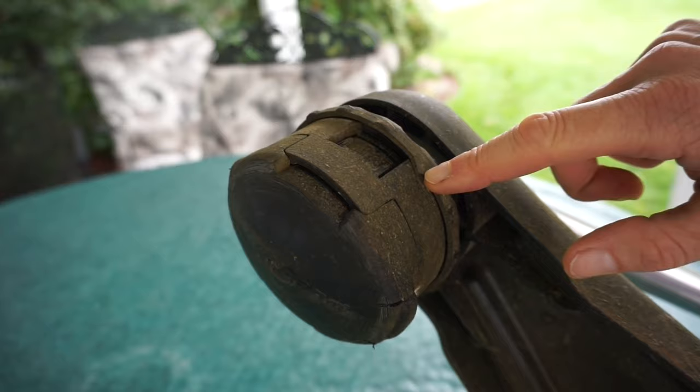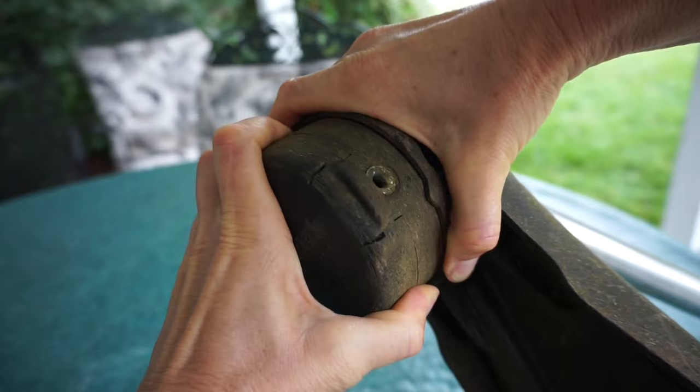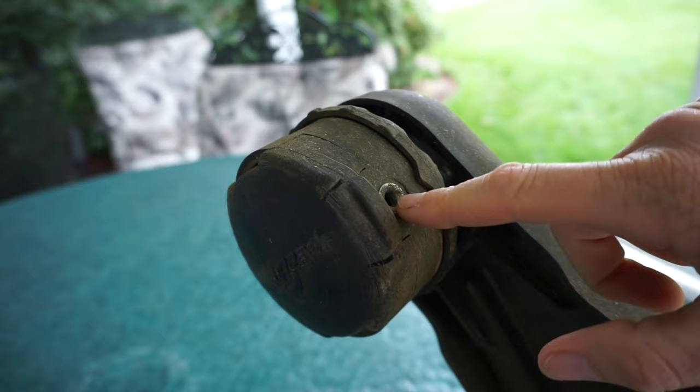Notice that there's two points on the top cap of the trimmer head. Hold onto the top cap and spin the head until the notch lines up with the eyelet.